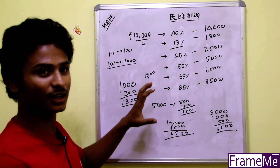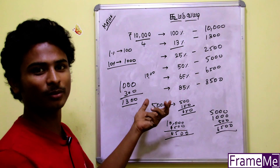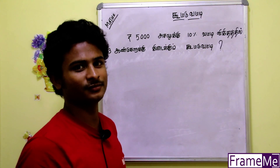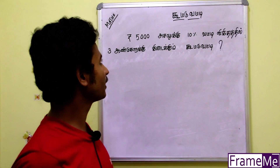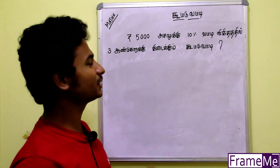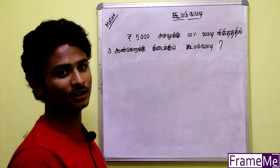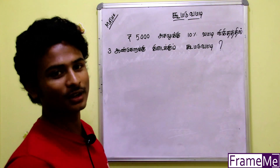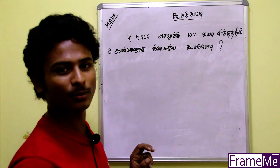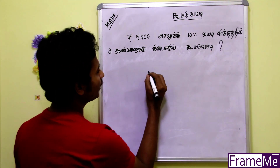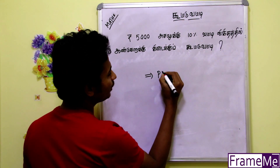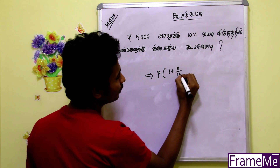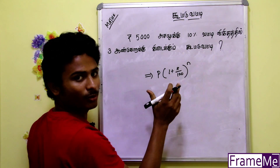First of all, a method. This method is an easy method. We are going to take how close this method. You can get everything up to the one. Make it easy. This is the formula: P into 1 plus R by 100 whole power N. That is the formula.